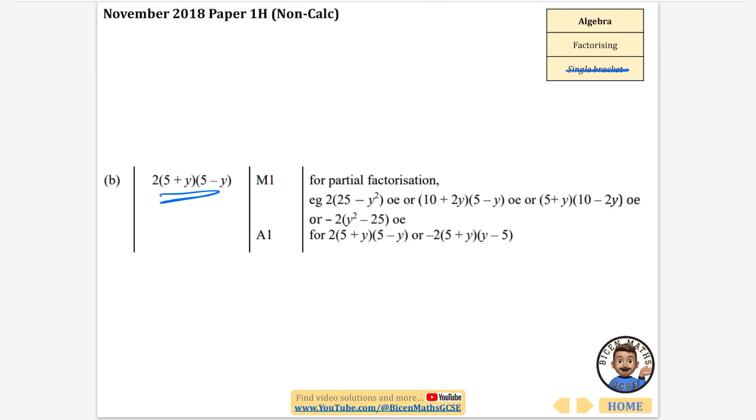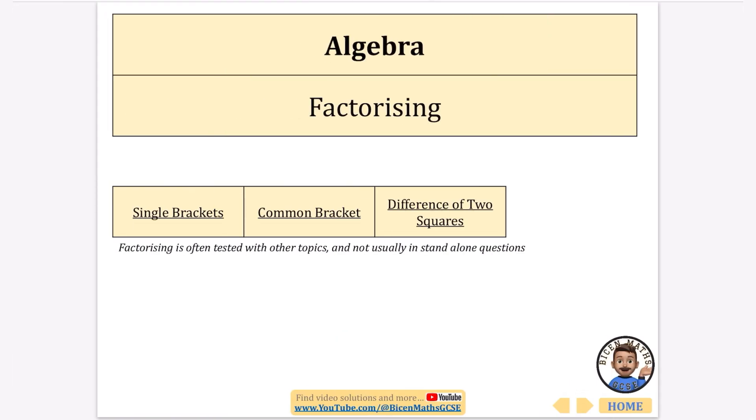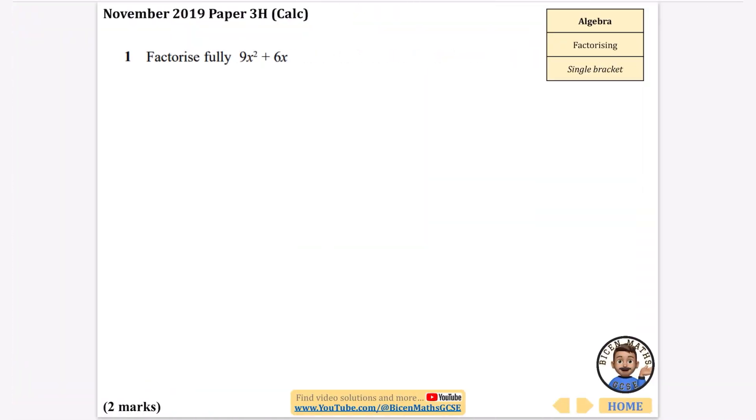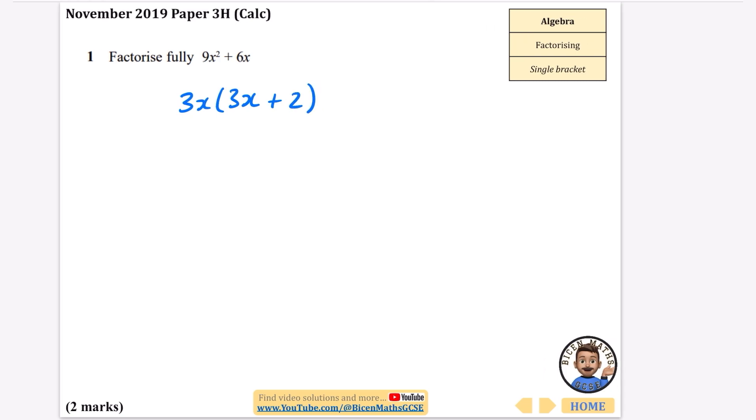This time we're going to factorize this one fully. The highest common factor that they've got is a 3 and an x, so that's going to be a 3 and an x to make a 9x squared and a 2 to make a 6x. So it's 3x brackets 3x plus 2, and there's nothing further that we can do with that one.